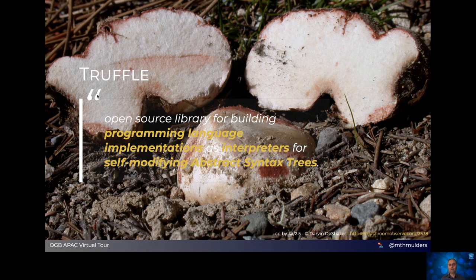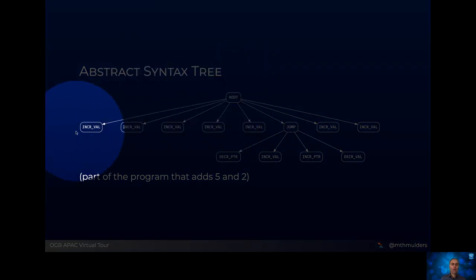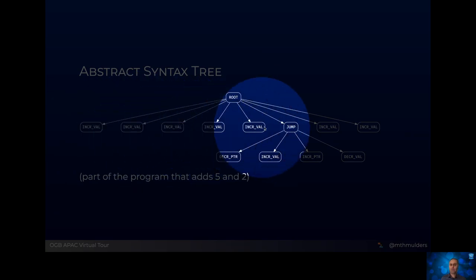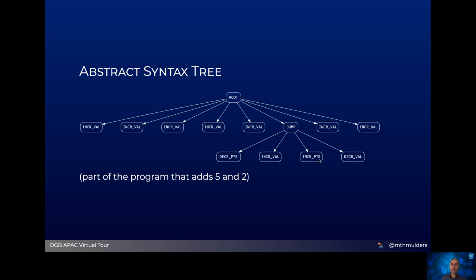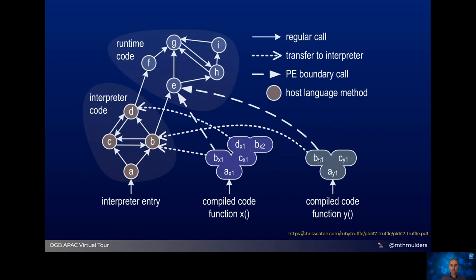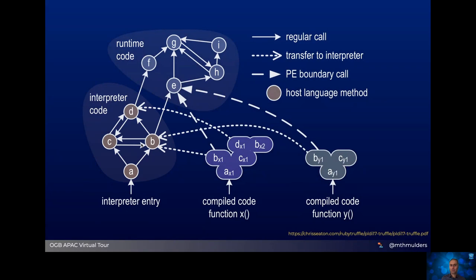What is an abstract syntax tree? Here's a little part of the abstract syntax tree for the program that adds the numbers five and two. An abstract syntax tree always has one root node — this is where program execution starts. Then there are nodes for each step the program needs to execute: increment a value, increment a value, jump to another location, increment a value. Nodes can also have child nodes, so a jump can determine whether or not to dive into that subtree. A program typically enters execution using the interpreter, and there are many nodes that invoke each other as program execution goes on.